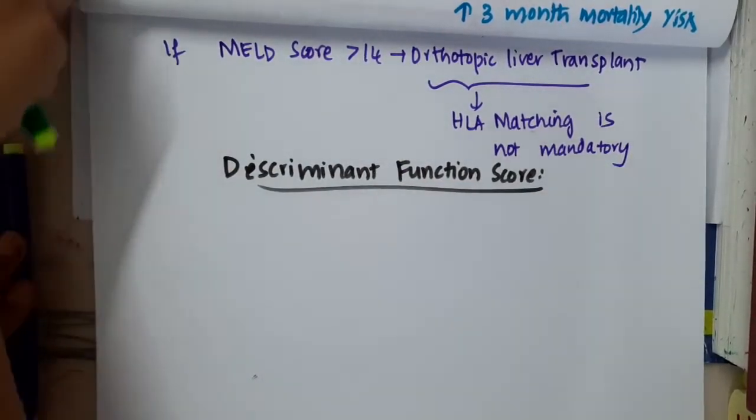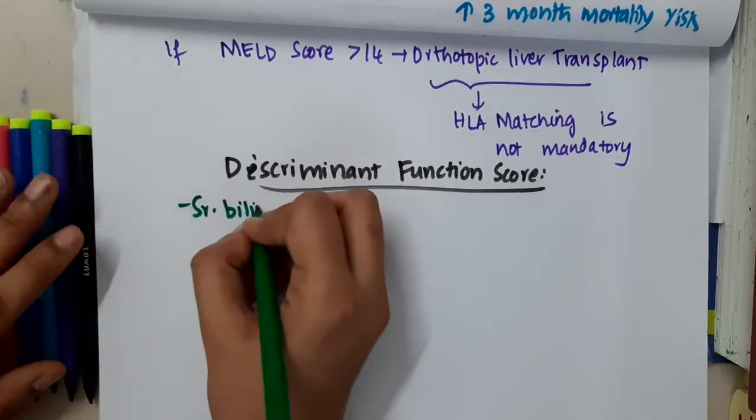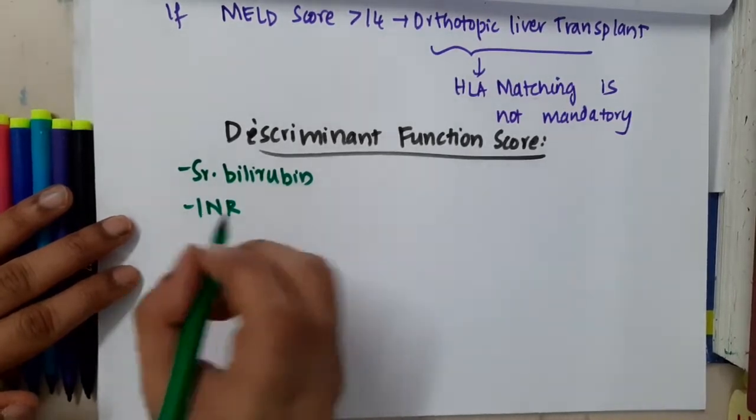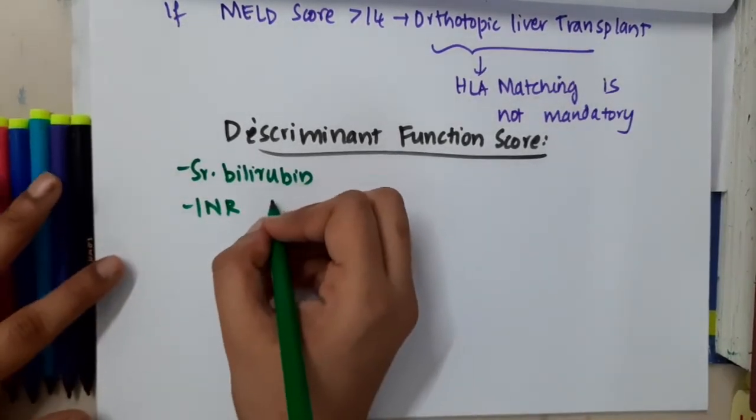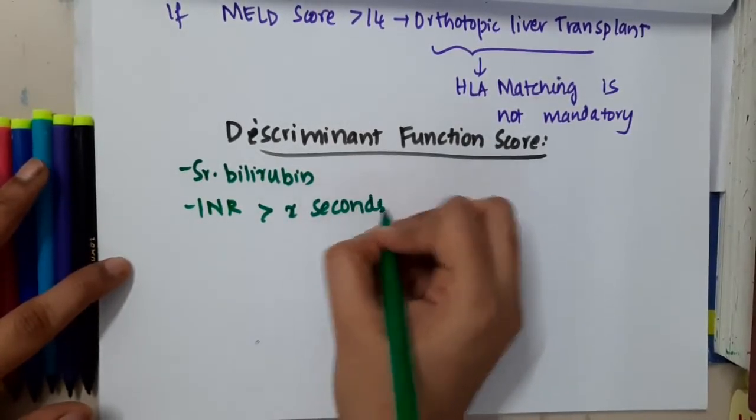In discriminant function score is serum bilirubin, INR, more than x seconds above normal.